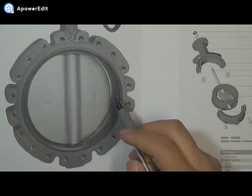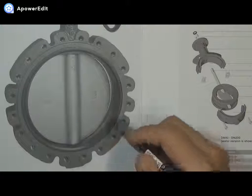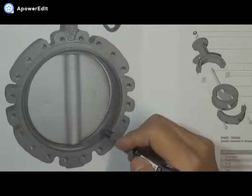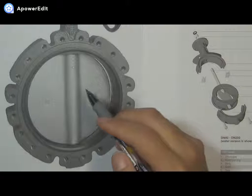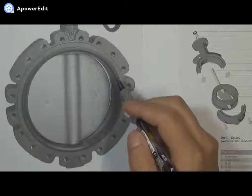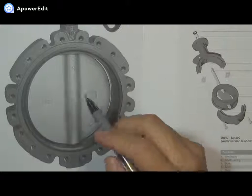So we must design the valve disc outside diameter bigger than the valve seat inside diameter. So when we're going to close the valve, the valve disc will squeeze the valve seat and then seal the pressure.